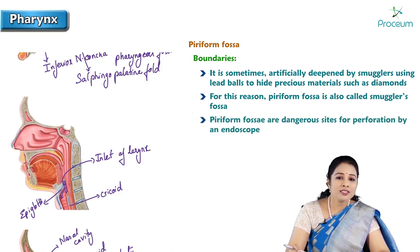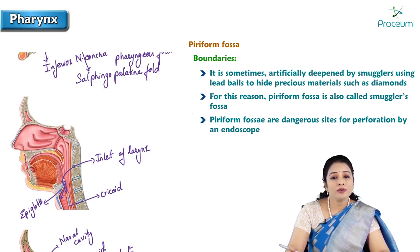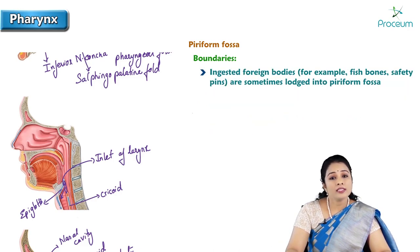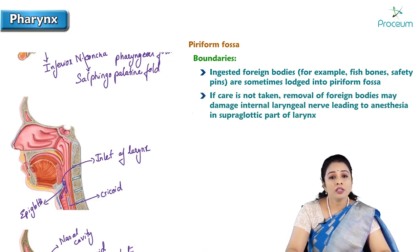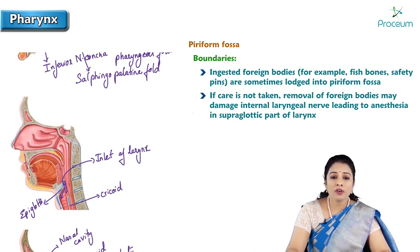The piriform fossa is a dangerous site for perforation by an endoscope because the floor contains the internal laryngeal nerve. Ingested foreign bodies, for example fish bones and safety pins, are sometimes lodged in the piriform fossa. If care is not taken, the removal of foreign bodies may damage the internal laryngeal nerve, leading to anesthesia in the supraglottic part of the larynx.